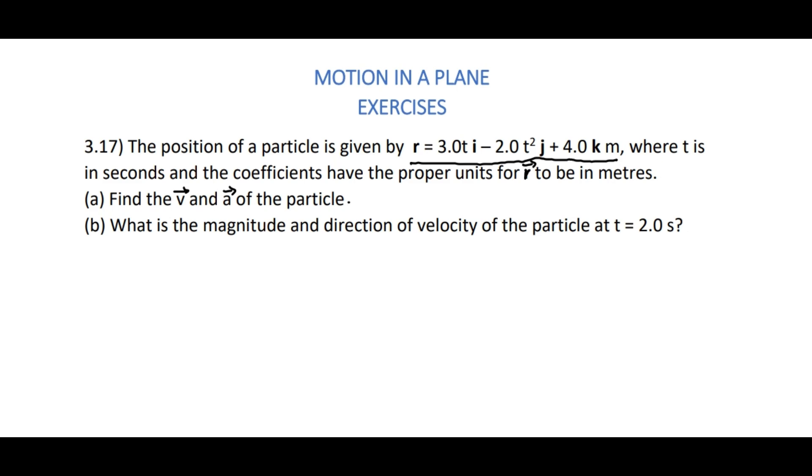3.17. The position of a particle is given by r bar equals 3.0 T i cap minus 2.0 T square j cap plus 4.0 k cap meter, where T is in seconds and the coefficients have the proper units for r bar to be in meters. (a) Find the v bar and a bar of the particle. (b) What is the magnitude and direction of velocity of the particle at t equals 2.0 seconds?